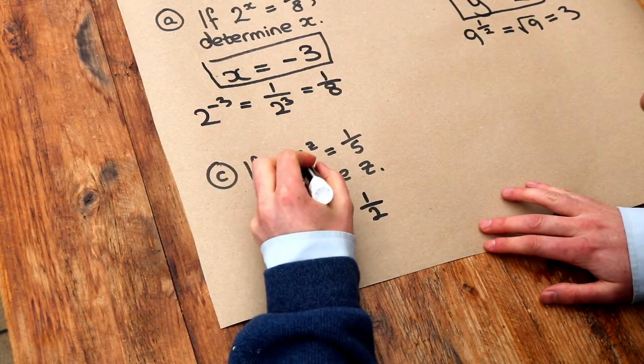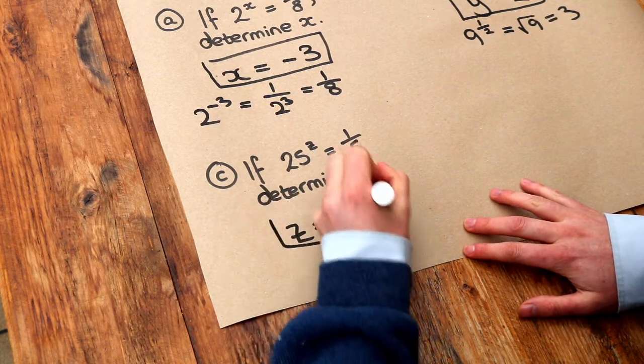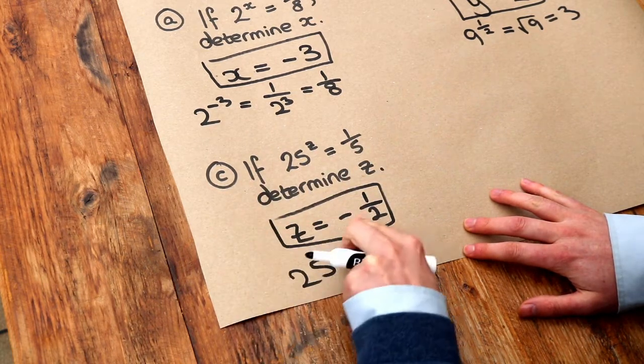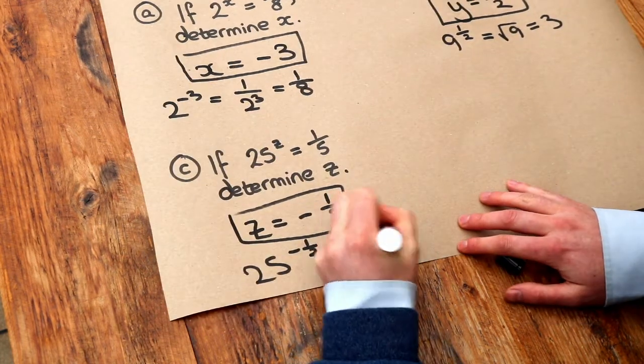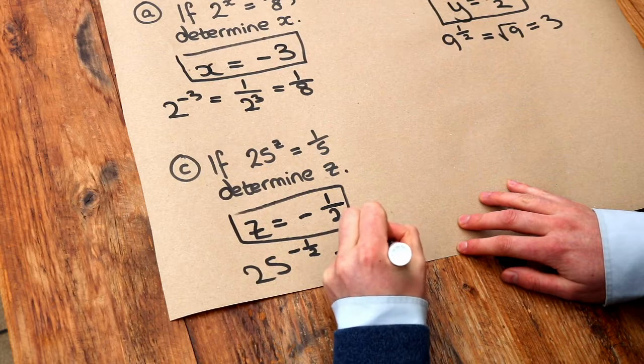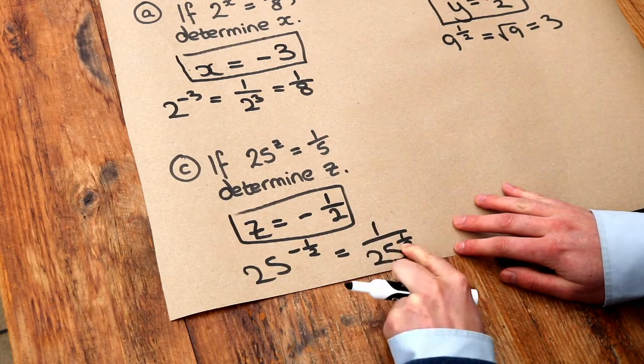So let's just test that. If we've got 25 to the minus half, z is minus half. Well, the negative power causes you to do 1 over it. So 1 over 25 to the half, without the negative there anymore.